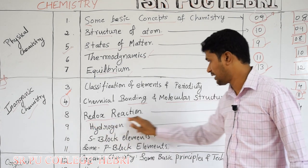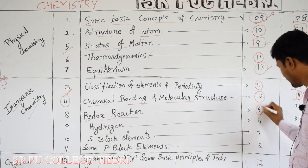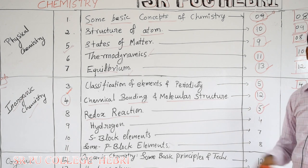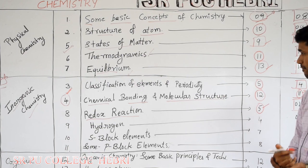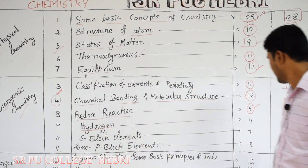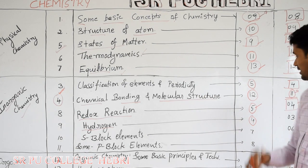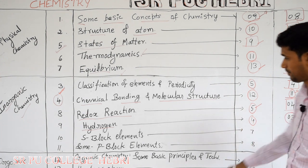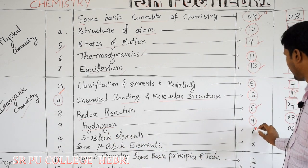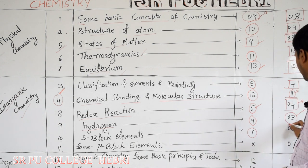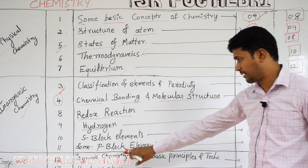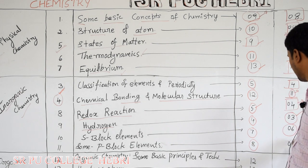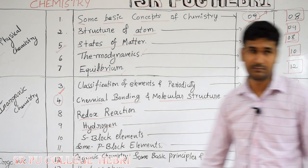The next inorganic chapter is 'Redox Reactions' — a very small chapter with 5 hours allotted and weightage of 4 marks. The next chapter is 'Hydrogen,' also a small chapter with 4 hours allotted and weightage of 3 marks. The next chapter is 'S Block Elements' with 7 hours allotted and weightage of 6 marks. The last chapter in inorganic chemistry is 'Some P Block Elements' with 8 hours allotted and total weightage of 7 marks.